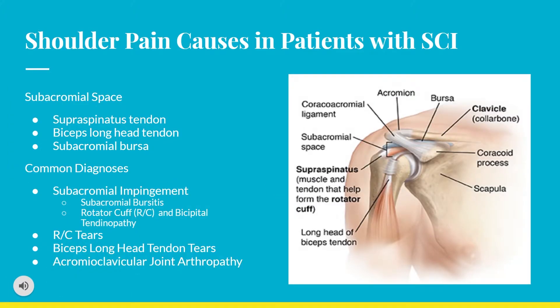The most common area of injury is the subacromial space, located above the humeral head and below the acromion. Two tendons run underneath that space: the supraspinatus tendon as part of the rotator cuff, and the bicep long head tendon. Those two tendons are also accompanied by the subacromial bursa. If this space gets smaller as a result of superior translation of the humeral head, many potential diagnoses may occur.